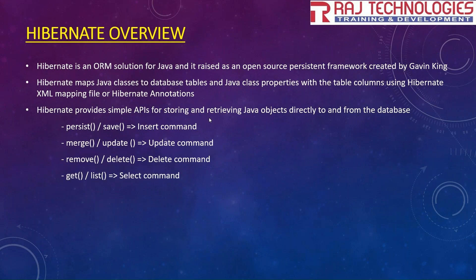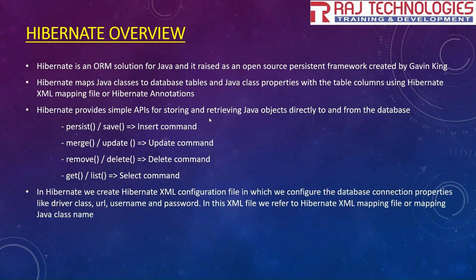In Hibernate 6 version, save, update, and delete are deprecated methods. In Hibernate 6 we need to use persist, merge, and remove. For SELECT operations, we use get or list. We will see complete practical examples in the next videos.